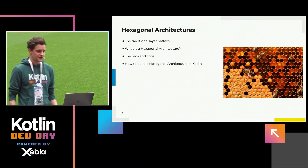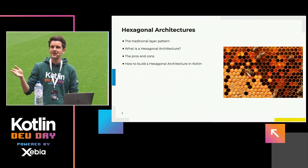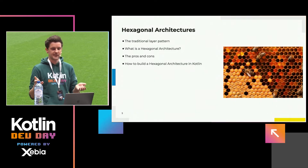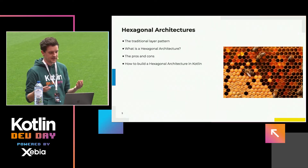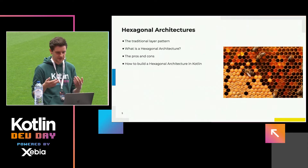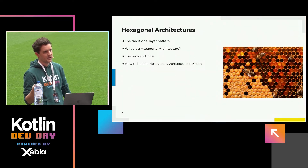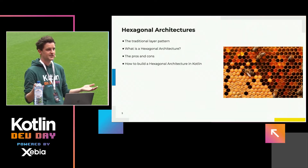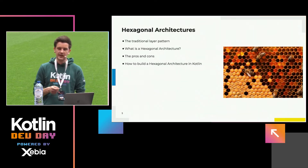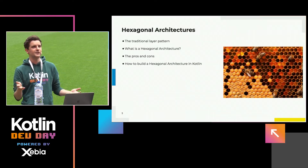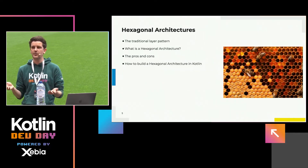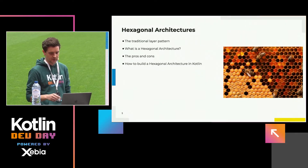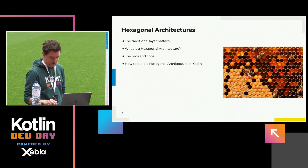First, I want to talk about the traditional layer pattern, because I think everyone knows the layer pattern. Then we will take a look at what the hexagonal architecture is, what it looks like, what the principles are. The pros and drawbacks, because there are no silver bullets in software architecture. And finally I will show you how to build your own hexagonal architecture, and how Kotlin will help you soften the pains of the drawbacks this pattern introduces.